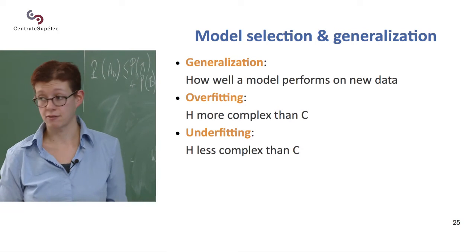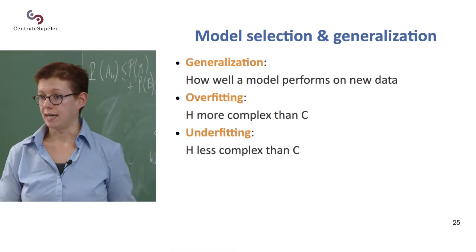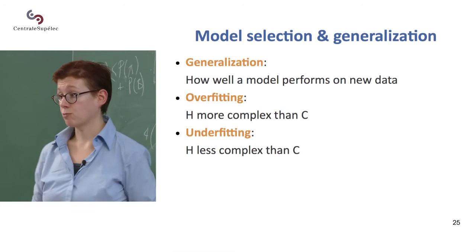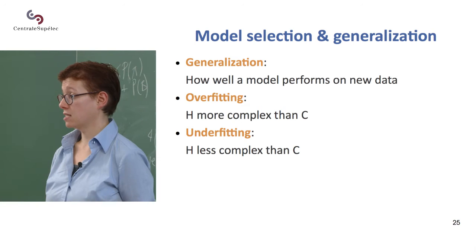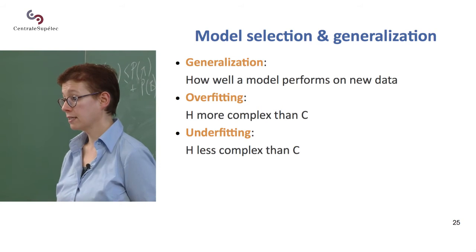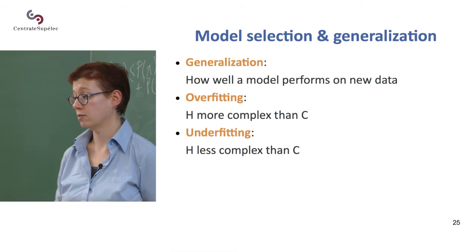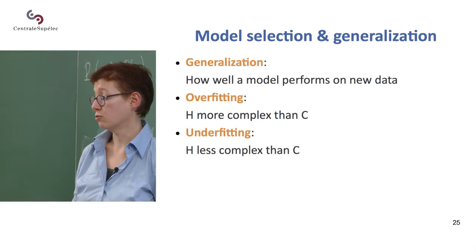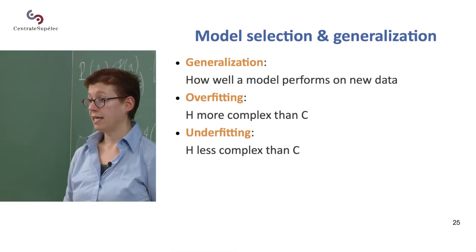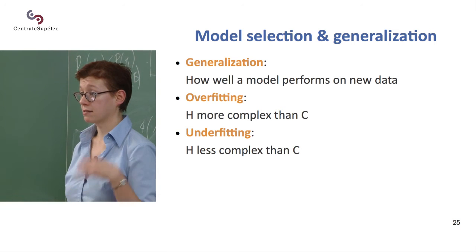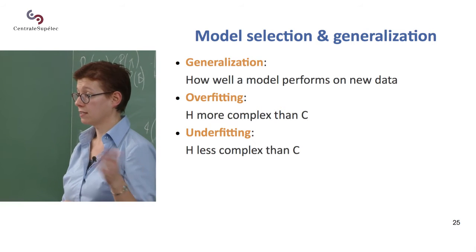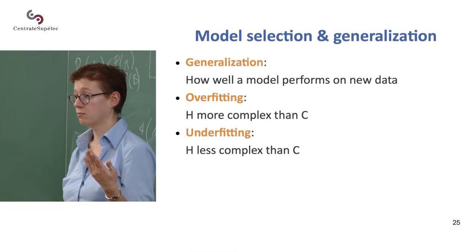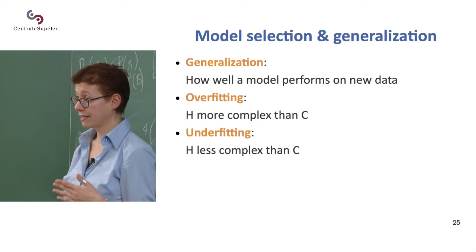So coming back to our hypothesis space and hypothesis classes, essentially, overfitting is what happens when your hypothesis space is more complex than the true class, and underfitting is what happens when your hypothesis space is less complex than the true class. So if your true class is a rectangle, and you take a line, this is less complex, remember the VC dimension, we say the VC dimension of a line was lower than that of a rectangle.